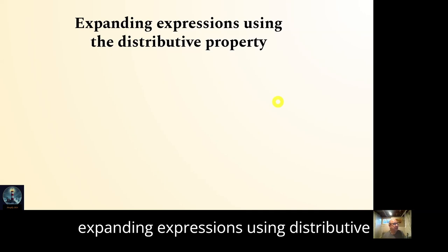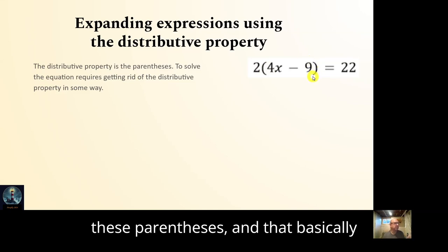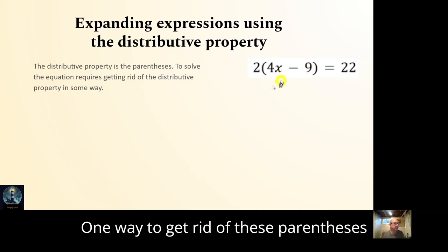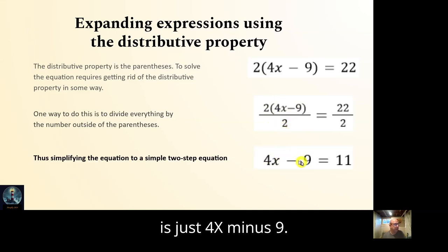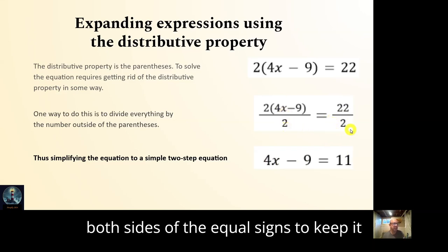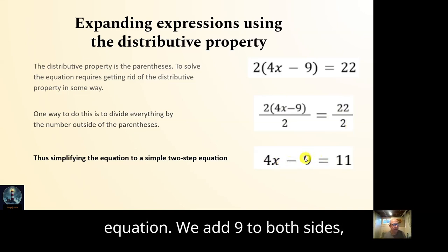The other part of the standard is expanding expressions using distributive property. So the distributive property is these parentheses. And that basically means we have two of these 4x minus 9's. So we have two 4x's and two minus 9's. One way to get rid of these parentheses is to divide by two. So if I divide by two, two of these 4x minus 9's divided by two is just 4x minus 9. 22 divided by 2 is 11. We have to do it on both sides of the equal signs to keep it equal. Now we have a simple two-step equation. We add 9 to both sides. So 11 and 9 is 20. Then we divide by 4. 20 divided by 4 is 5.